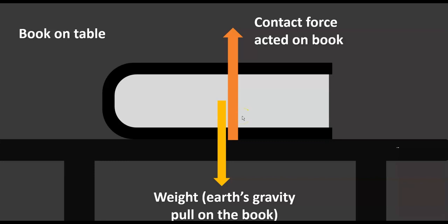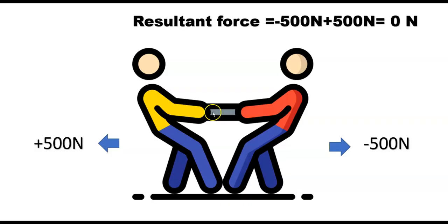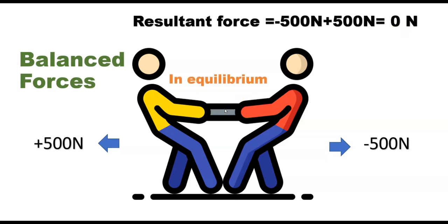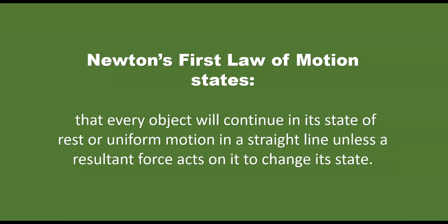Let me give you a clearer illustration of balanced forces. We have two persons pulling an object. Both exert an equal force of 500 Newtons but in opposite directions. Because the two forces are equal in magnitude but opposite direction, the resultant force is zero. We say the forces are balanced and the object is in equilibrium at rest, not moving. So when forces are balanced, it is a case of Newton's first law of motion that states that when the object is at rest, it will remain at rest.